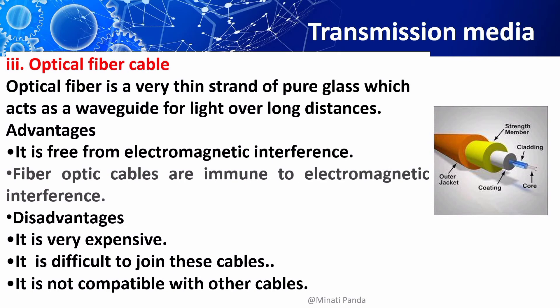The disadvantages of fiber optic cable include: it is difficult to join these cables; it is not compatible with other cables; fiber optic cables are quite fragile and may need special care for an office environment; light can reach the receiver out of phase; connection losses are common problems; and optical cables are the most difficult to splice and the most expensive of all cables.